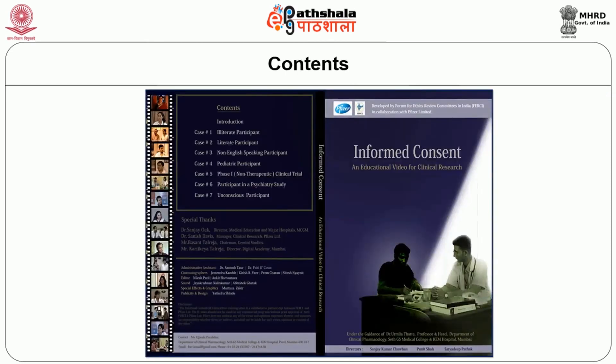A video on informed consent has been created by the Forum for Ethics Review Committees in India, showing seven different situations where informed consent is given in a wrong way and then in a right way, which can be used for teaching purposes. In public health, epidemiological, or social science research — which you are mostly involved in — you have to take consent from individuals or a community. Wherever needed, community leaders' consent will be taken, but you cannot compromise on individual consent after the community leader's — also called the gatekeeper's — consent is obtained.